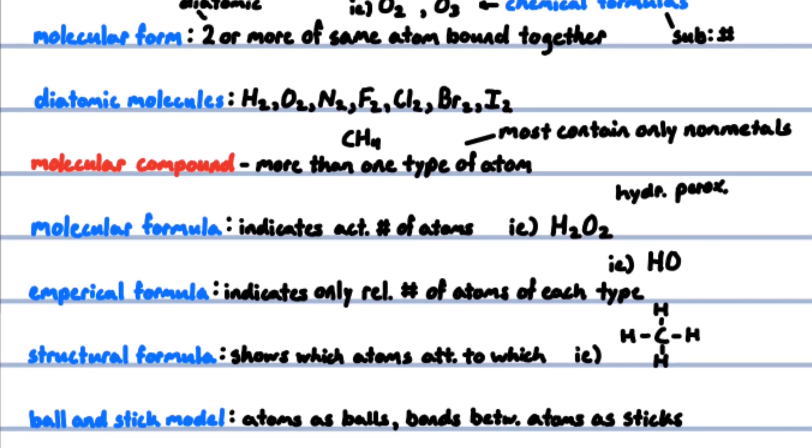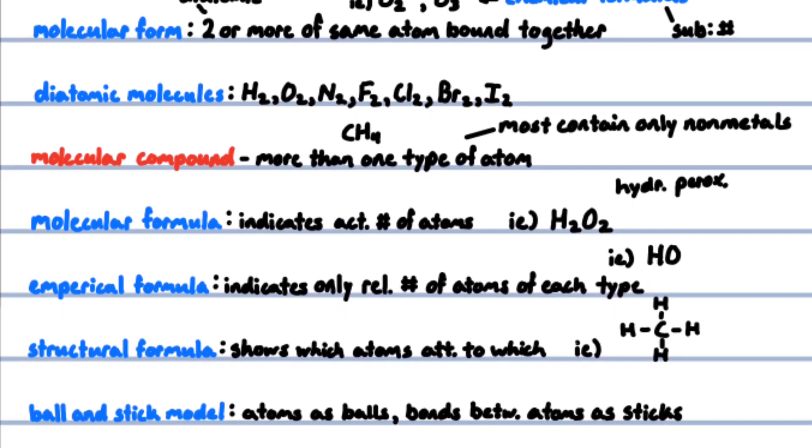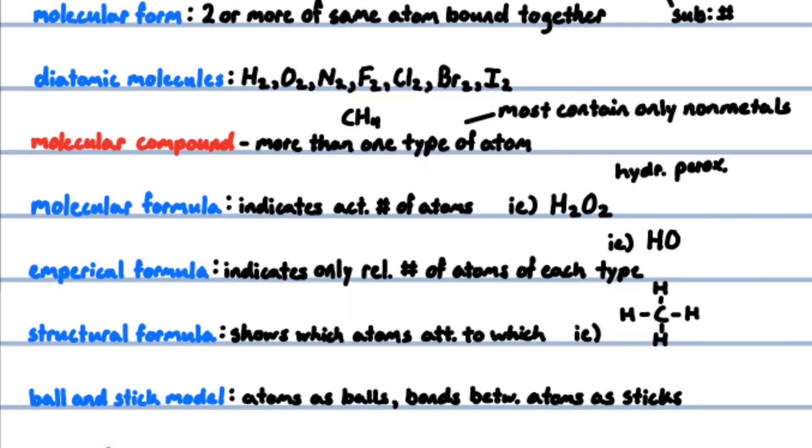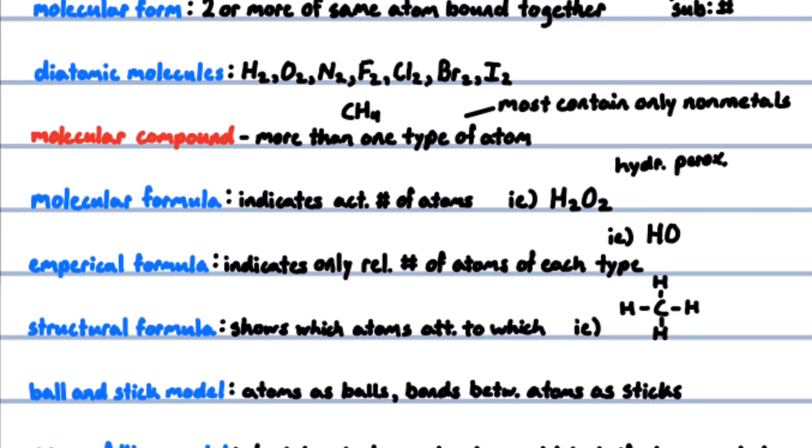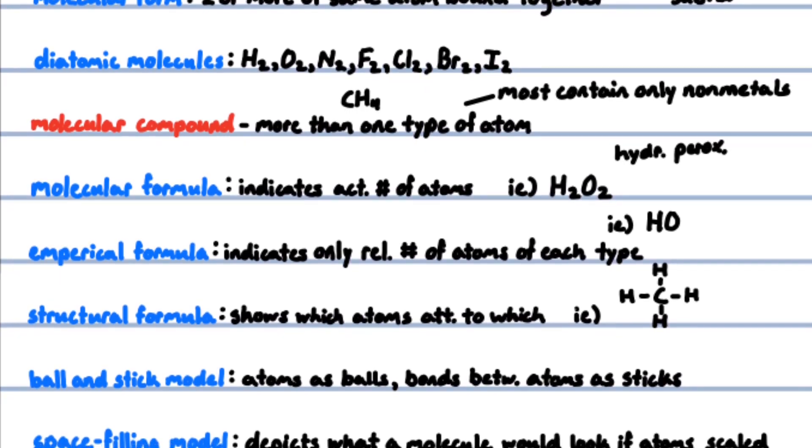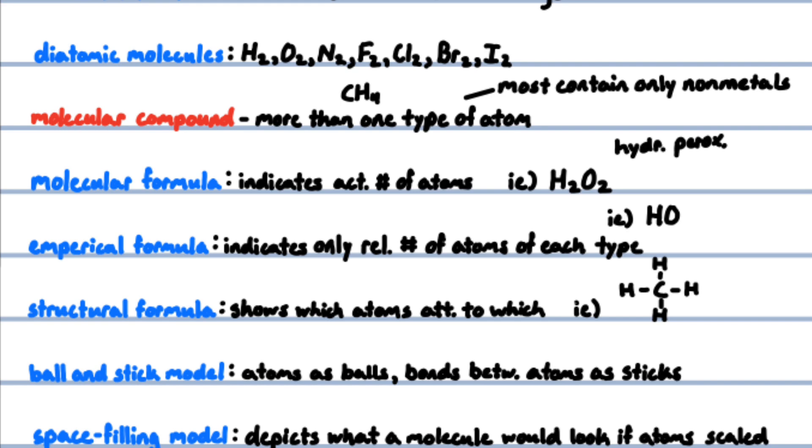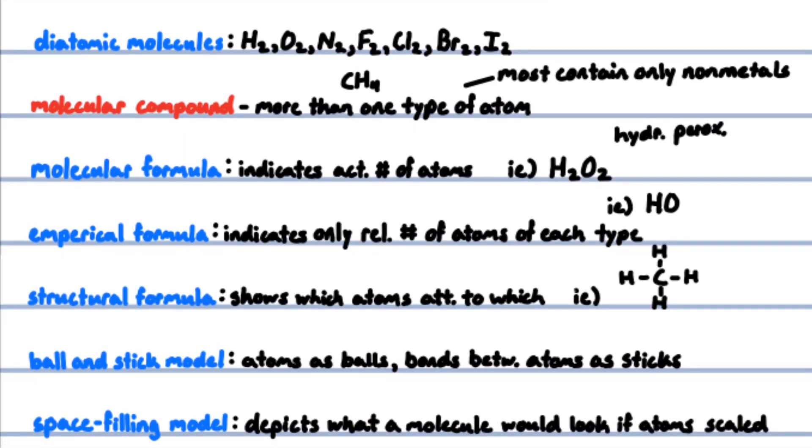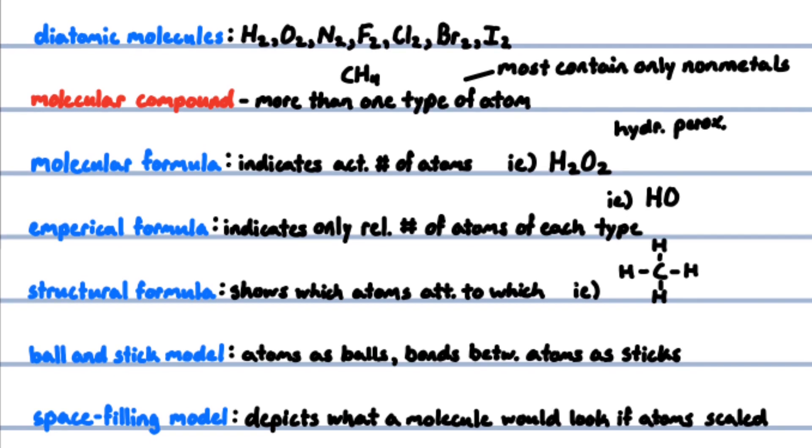The subscript tells how many of that type of atom are present in each molecule. Methane has four hydrogen atoms attached to one carbon atom. Most molecular substances contain only non-metals. Molecular formulas are chemical formulas that indicate the actual numbers of atoms in a molecule—for example, hydrogen peroxide, H2O2, has two hydrogen atoms and two oxygen atoms per molecule. Empirical formulas give only the relative number of atoms of each type in a molecule. Hydrogen peroxide has the empirical formula HO—one hydrogen atom per one oxygen atom.